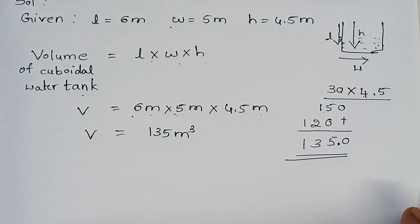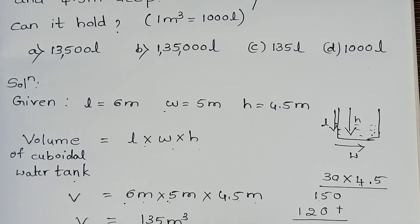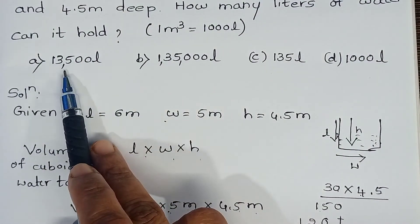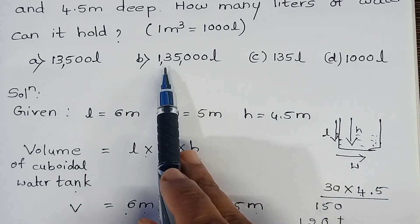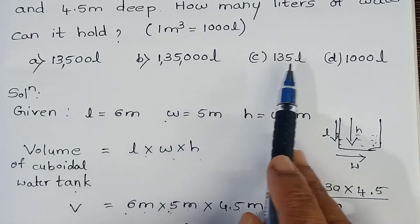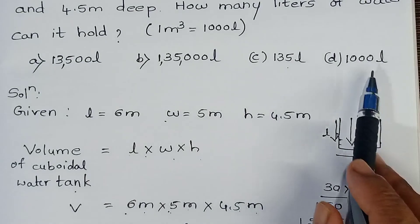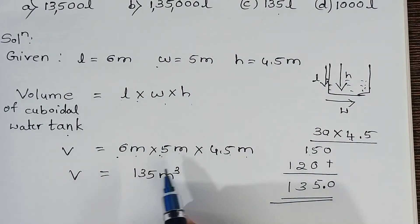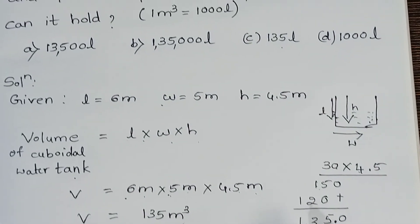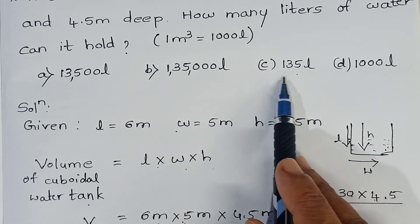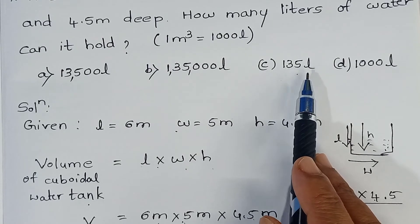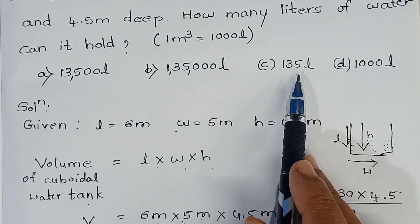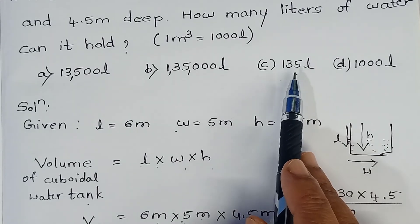Now, let's see the option. See here, they have given 4 options: 13,500 liter, 135,000 liter, 135 liter and 1000 liter. In the answer, we got 135 meter cube. But see here, in the option, they have given 135 liter just to confuse us. So, this is not the correct answer.